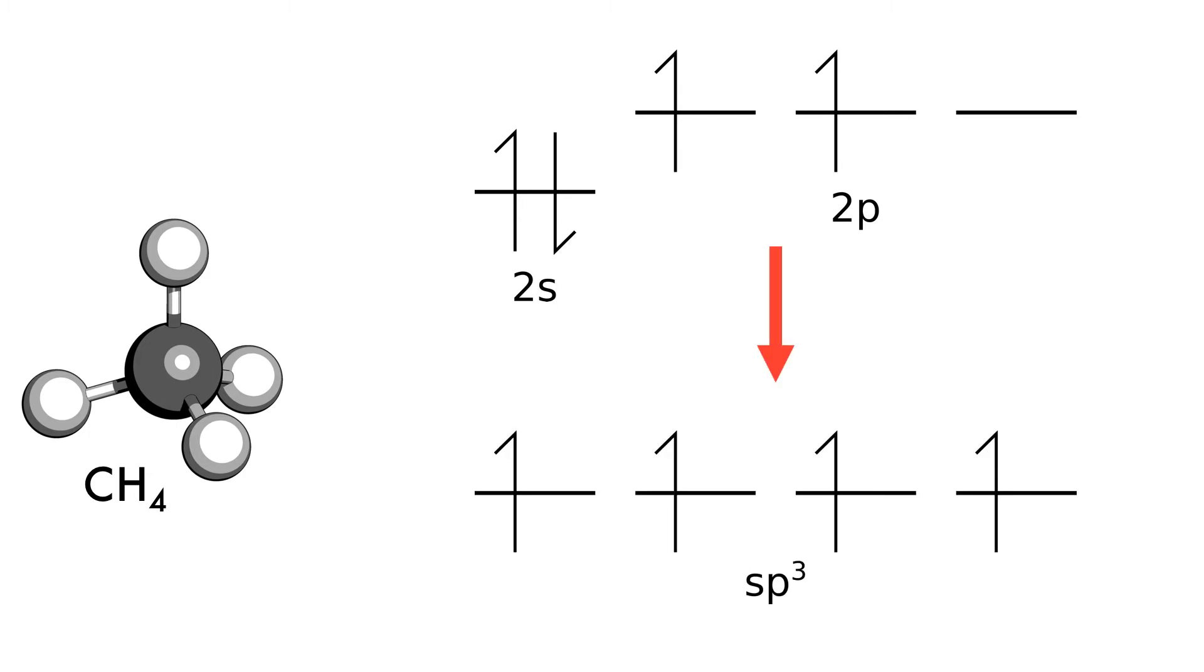The orbitals can then be hybridized to form four sp3 orbitals of identical energy, or degenerate. These degenerate orbitals are all half filled and can accept one other electron which will come from the other atoms in the covalent bond.